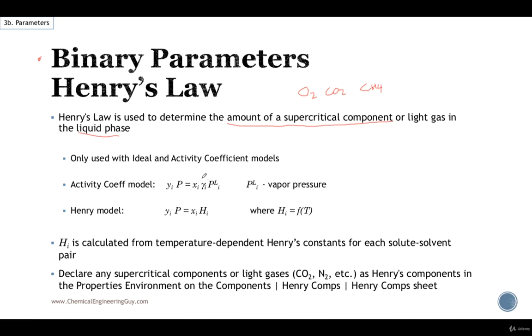Now we use this typically in ideal or activity coefficient models. So in the activity coefficient model we have this. Hopefully you remember that PLI is the vapor pressure. What Henry's model does is that it assumes that this value is fixed, and that the activity coefficient is actually constant as well for dilute solutions. So this is the Henry's law, mathematically speaking.